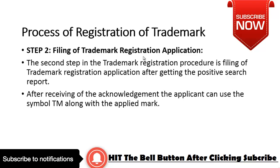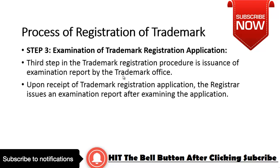The second step in the trademark registration procedure is the filing of a trademark registration application. After getting a positive search report — confirming that your brand name, brand logo, or brand slogan is not already registered and the government hasn't granted it to anyone else — you can go ahead and apply so that it can be registered in your name, making you the sole representative of that brand name, logo, or slogan.